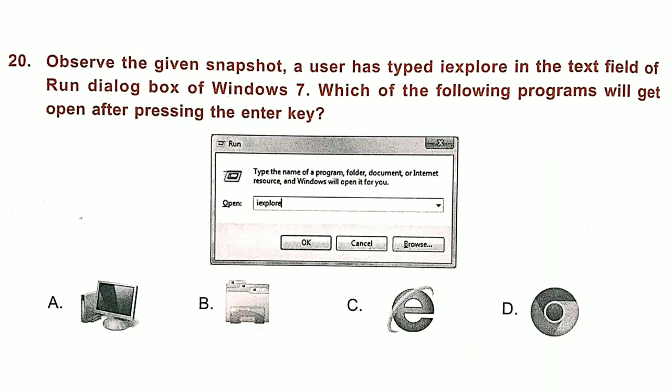Question 20. Observe the given snapshot. A user has typed IEXPLORE in the text field of the Run Dialog box of Windows 7. Which of the following programs will get open after pressing the Enter key? Answer is option C: Internet Explorer.